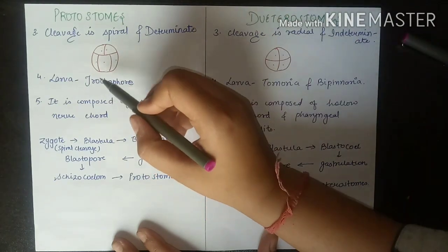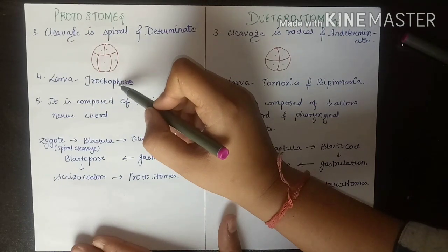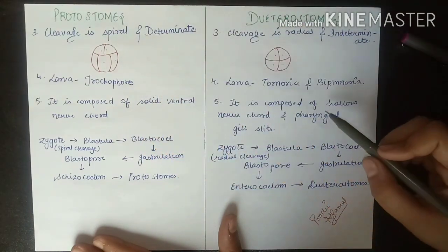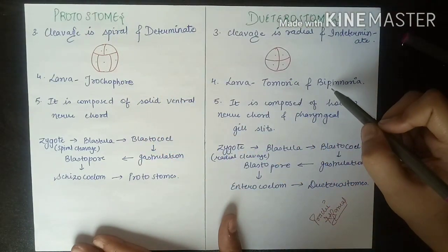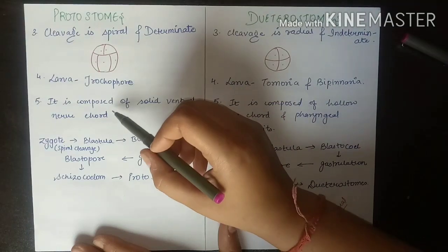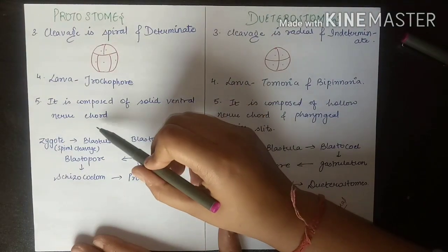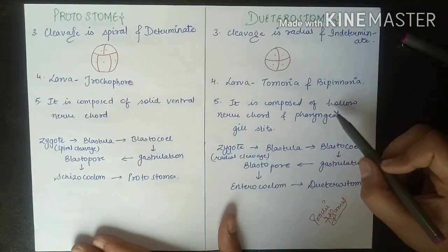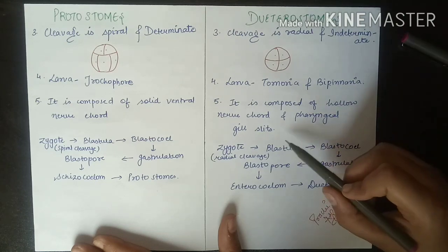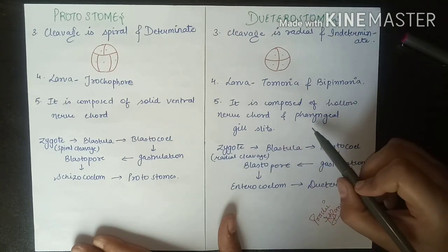The larval form in protostomes is the trochophore larva, and in deuterostomes it is the tornaria or bipinnaria. Protostomes have a solid ventral nerve cord, while deuterostomes have a hollow nerve cord and pharyngeal gill slits.